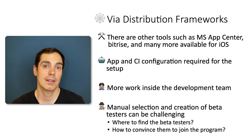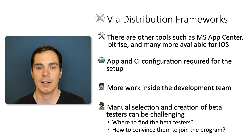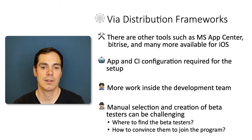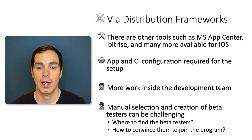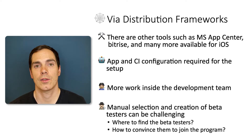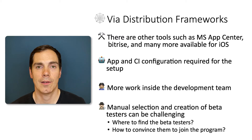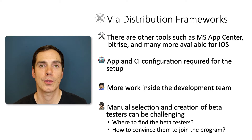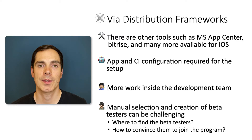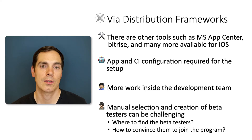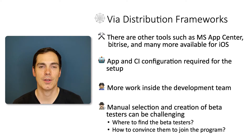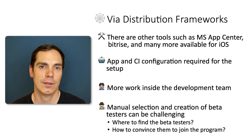One big challenge is the manual selection and creation of beta testers. Finding 10,000 beta testers — where to find them, how to contact them, how to onboard them, and how to convince them to join — can be really difficult. One approach is a landing page advertising the program. You can also offer rewards such as prizes or monetary incentives for users who send great feedback or find critical issues.